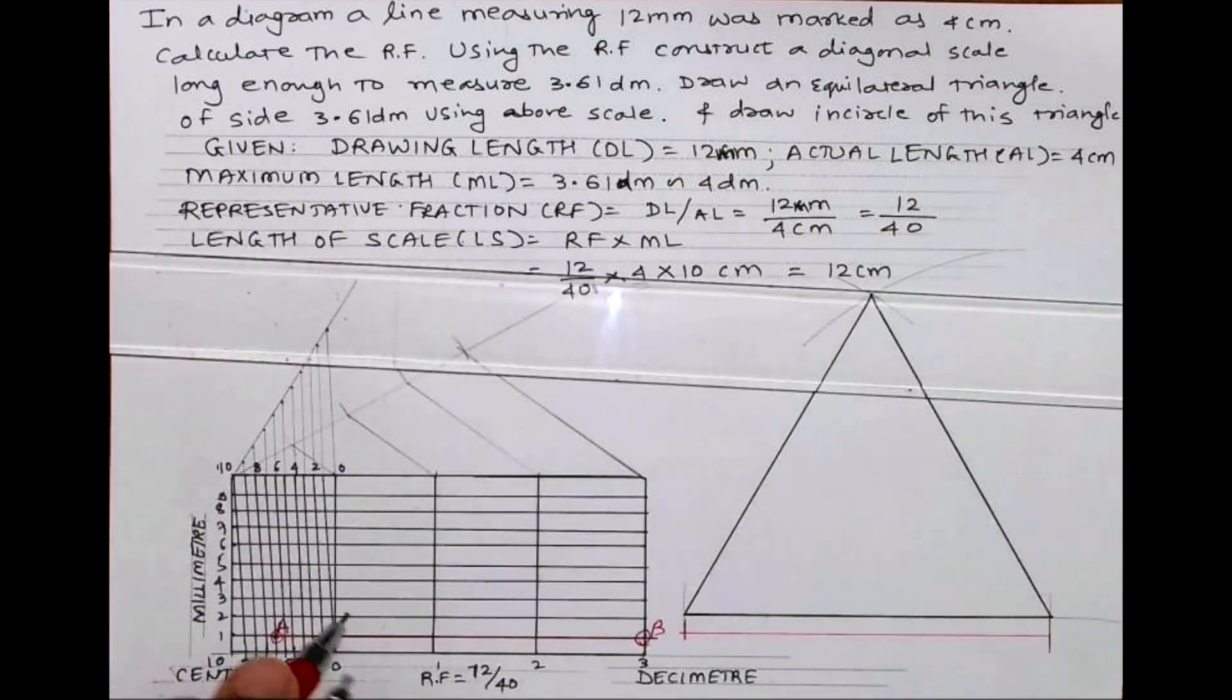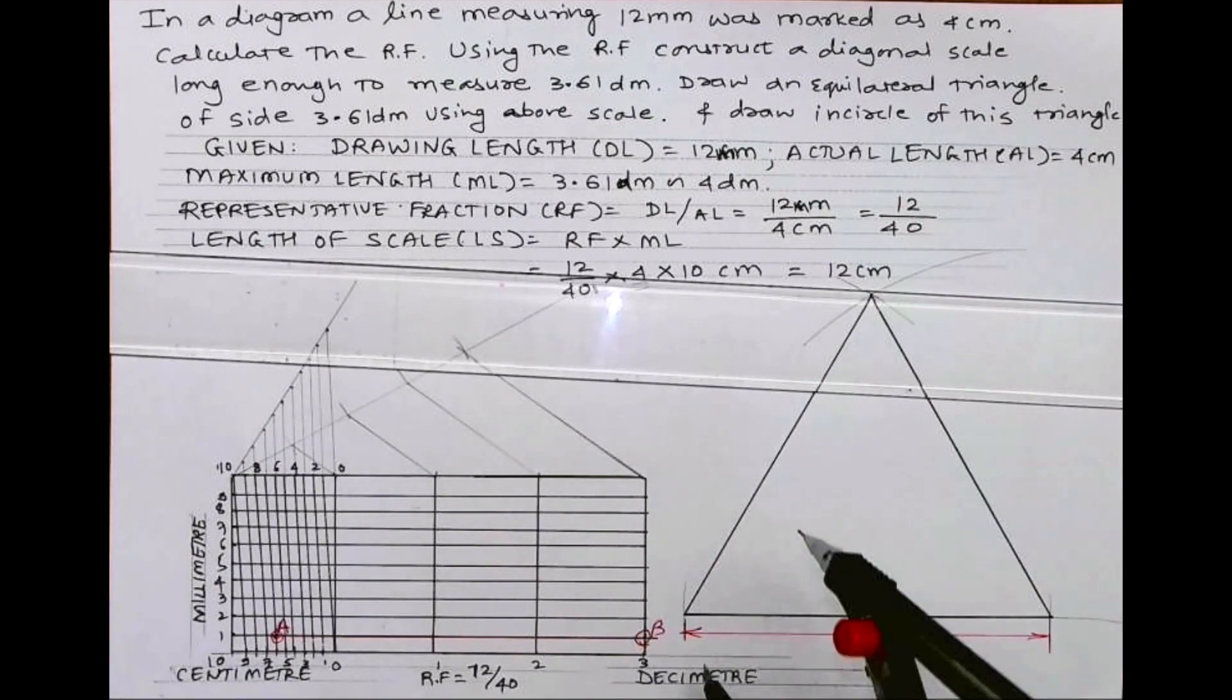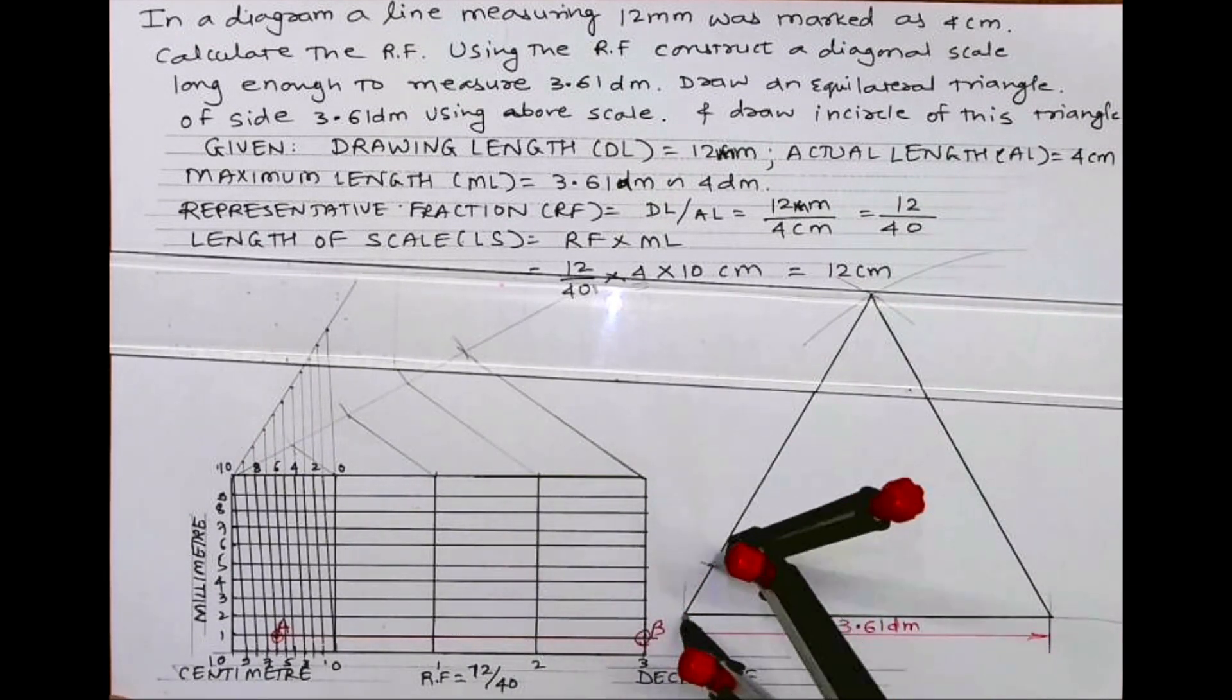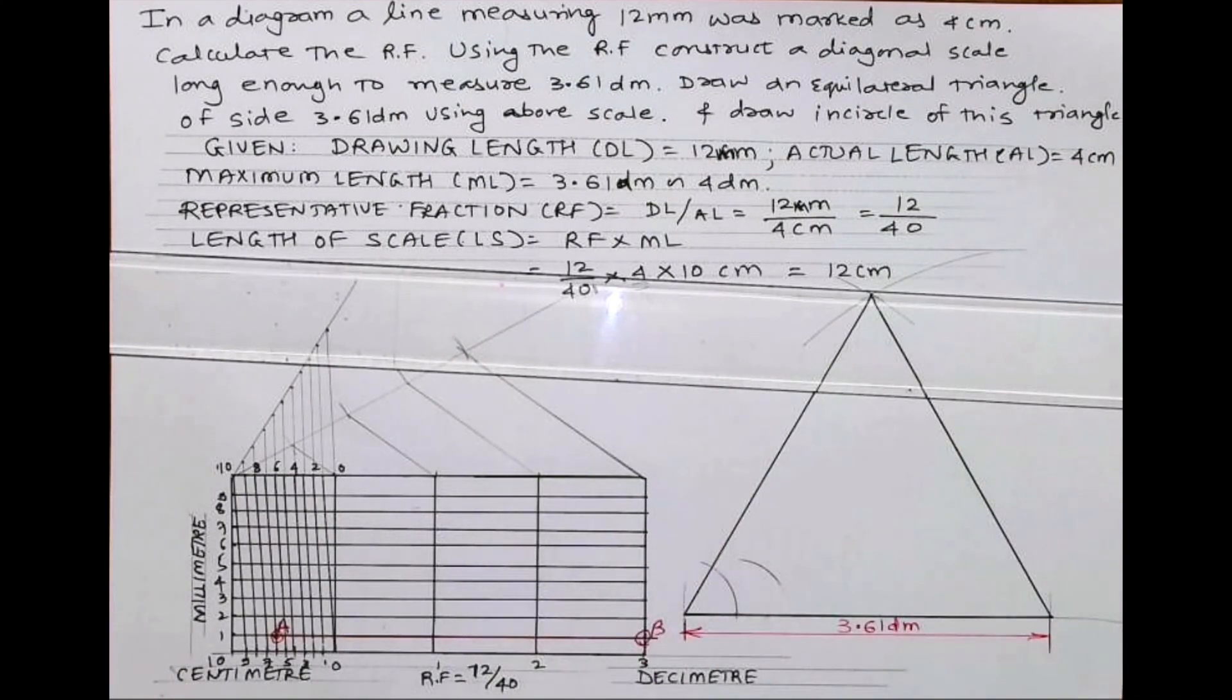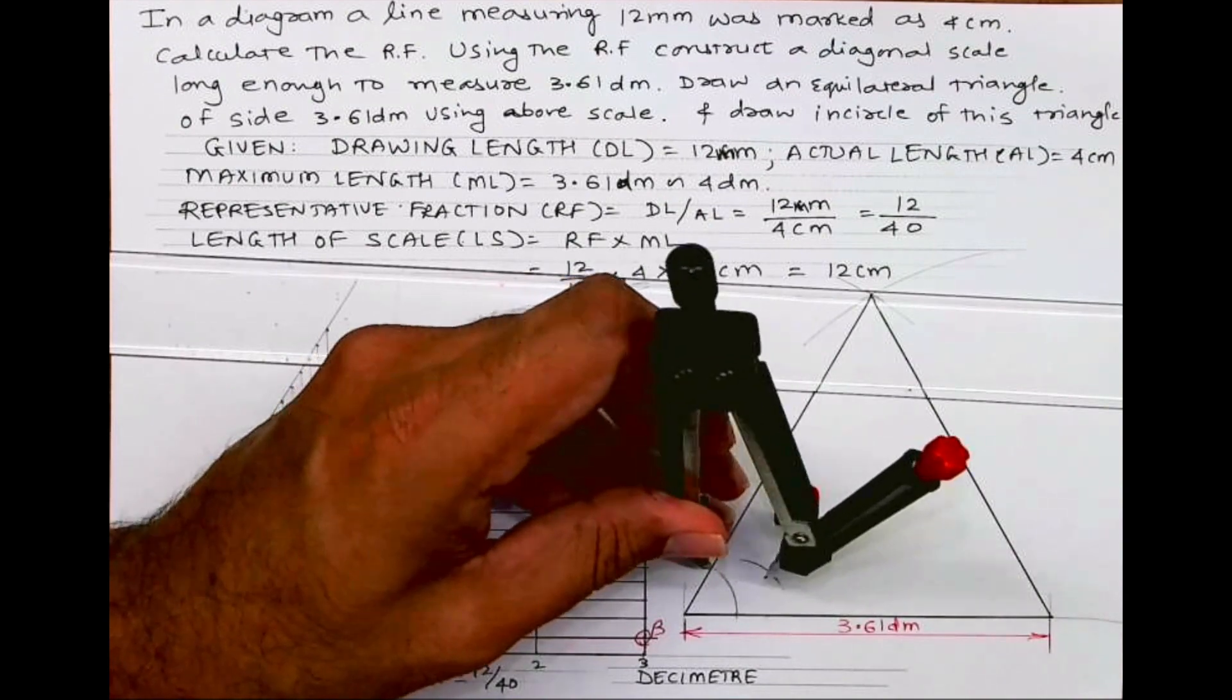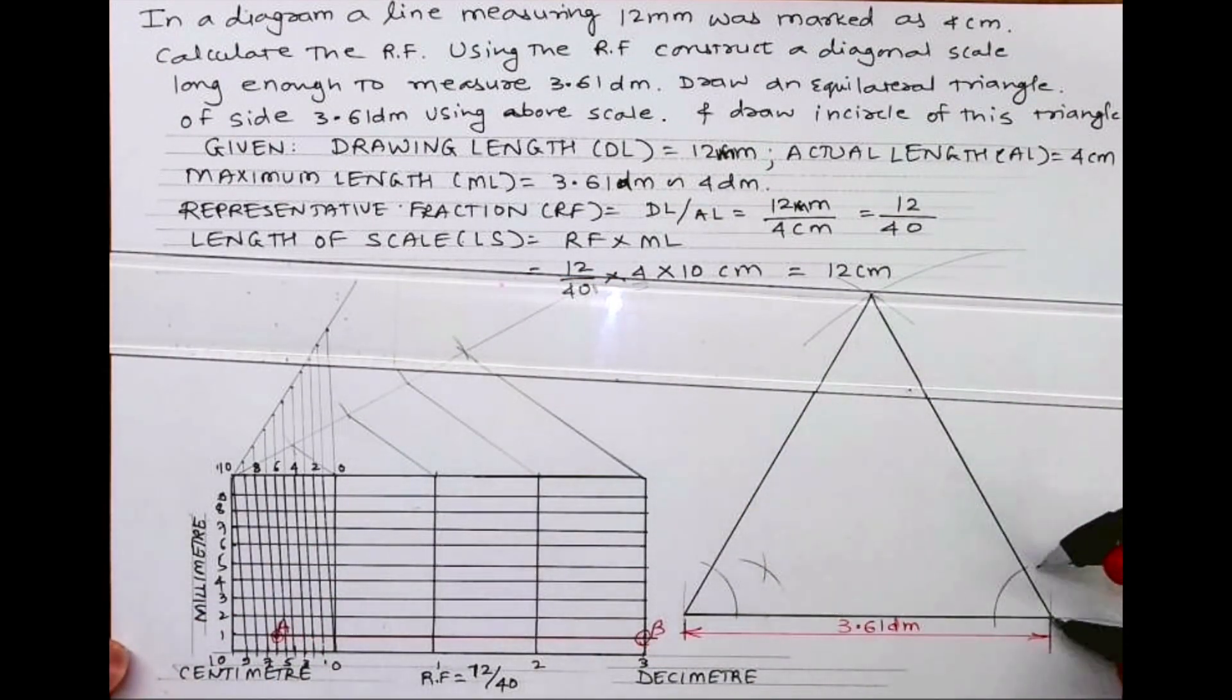Now we need to draw an inscribed circle. So we will bisect two angles. This is 3.61 decimeter. We bisect one angle from here, and we'll bisect another angle from here.